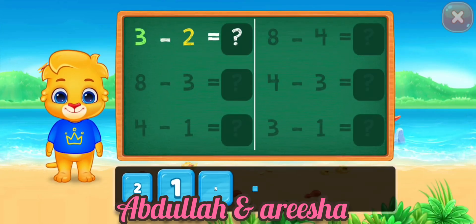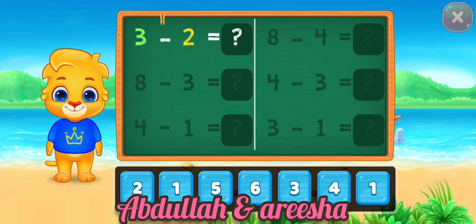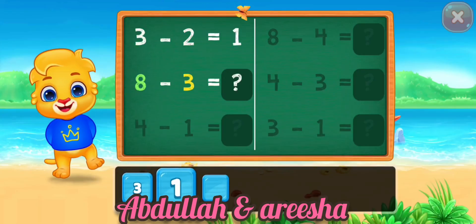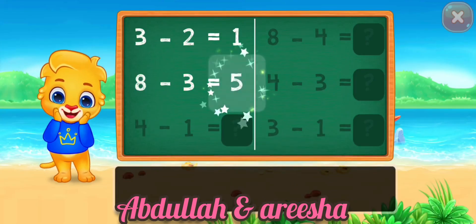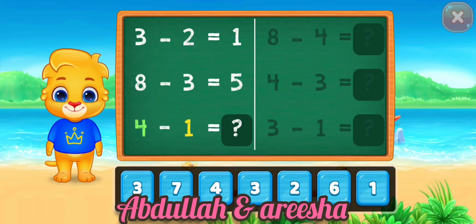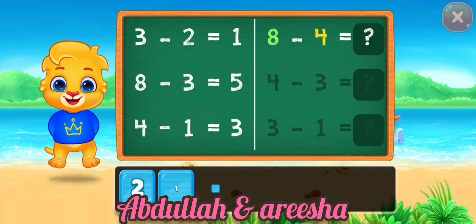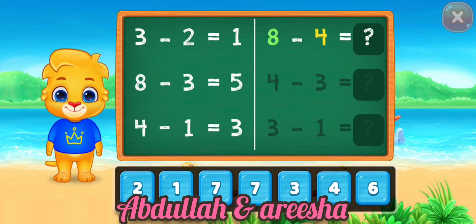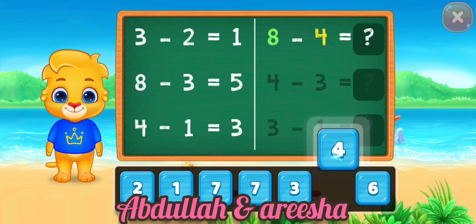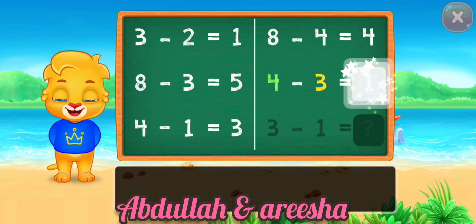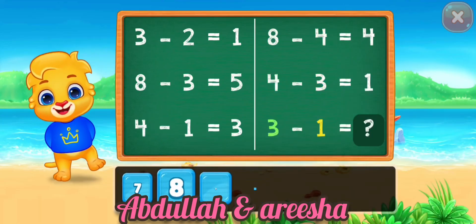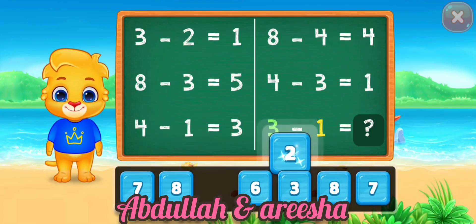3 minus 2 is equal 1. 1. 8 minus 3 is equal 5. 4 minus 1 is equal 3. 8 minus 4 is equal 4. 4 minus 3 is equal 1. 3 minus 1 is equal 2.